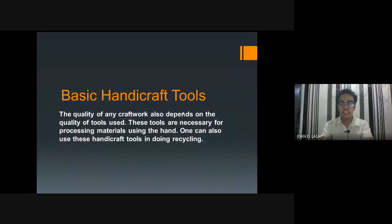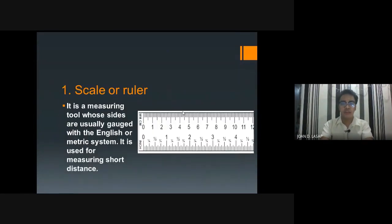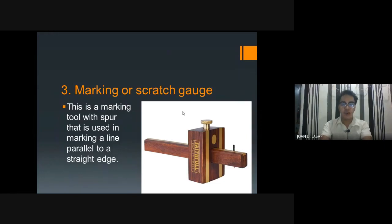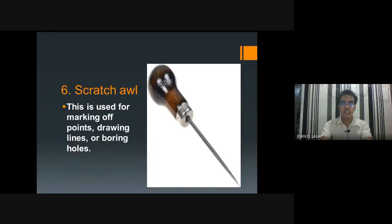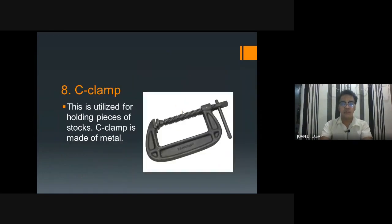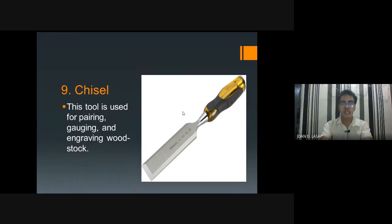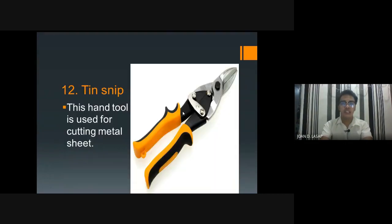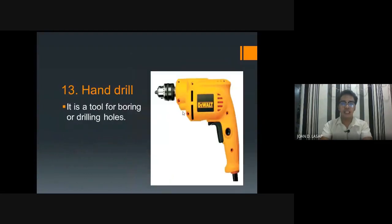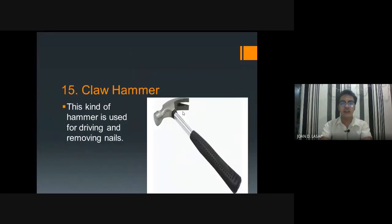Last time we discussed about the basic handicraft tools. These are the basic handicraft tools that we are going to use: the scalar ruler, the tri-square, the marking or scratch gauge, the sliding tee bevel, the nail set, the scratch hole, the mallet, C-clamp, G-cell, cross-cut saw, clip saw, pin snip and drill, tires, and claw hammer.